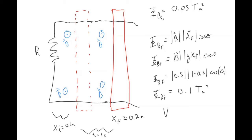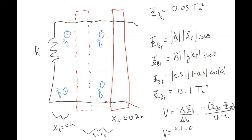To get a voltage, it's negative change in magnetic flux over change in time — that's negative (flux_final minus flux_initial) divided by (t_final minus t_initial). Our final flux was 0.1, our initial flux was 0.05, and that took 1 second. So the voltage generated would be 0.05 volts in the negative direction. We'll talk about the direction of the current in a moment.